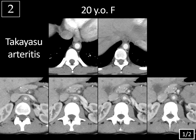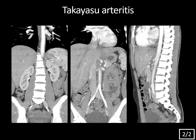Takayasu arteritis is a chronic large vessel vasculitis, typically affecting the aorta and its major branches. It's much more common in females and has a higher prevalence in Asian populations. Onset is usually between ages 15 and 30, and symptoms vary depending on where stenotic lesions or thrombus formation occurs. It may only involve the aortic arch and its branches, but in this case it involves the descending thoracic aorta, abdominal aorta, and some mesenteric and renal arteries. Findings include wall thickening, enhancement, stenosis, occlusion, and aneurysm or pseudoaneurysm formation as disease progresses.